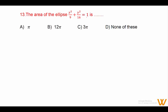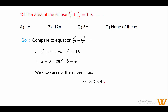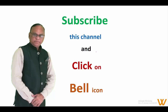Question 13: Area of the ellipse x²/9 + y²/16 = 1. Comparing with standard form, we get a² = 9 and b² = 16, so a = 3 and b = 4. Area = πab = π × 3 × 4 = 12π. Answer is option B: 12π. Please subscribe to the channel and click the bell icon. Thank you.